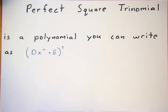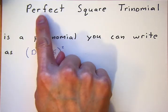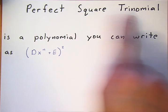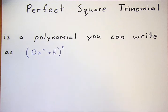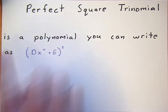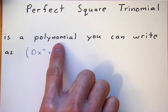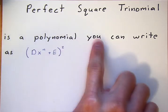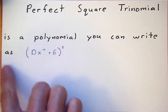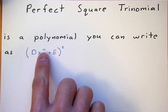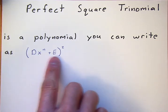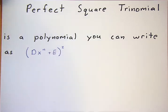This video is on perfect square trinomials. A perfect square trinomial is a polynomial you can write as (dx^n + e)², where the expression is squared.